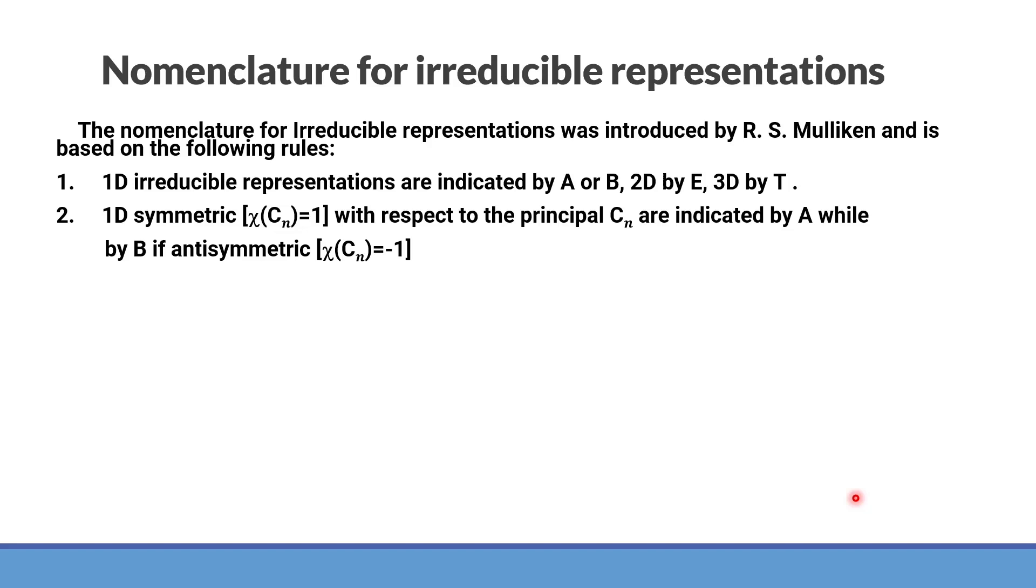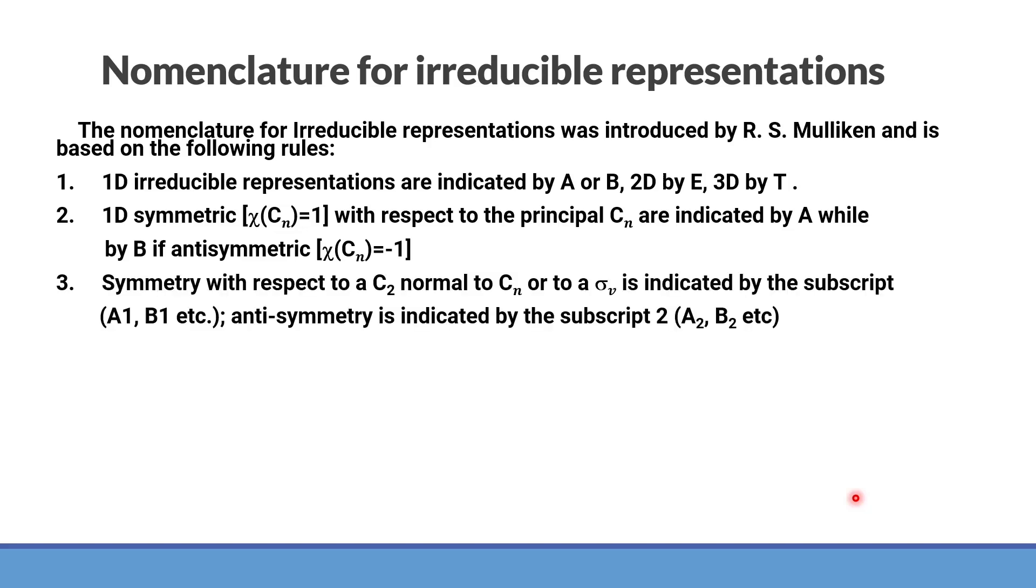We should use A when the characters for principal axis are positive, then we say that it is A. If the character for principal axis are negative then we say it is B, that is when it has undergone a transformation. Similarly, sometimes we give labeling of different kinds. Sometimes we get A1, B1, A2, B2, etc. Symmetry with respect to C2 normal to Cn or to a sigma v is indicated by the subscript A1, B1, etc. Anti-symmetry is indicated by the subscript 2 and sometimes it is like A2, B2.